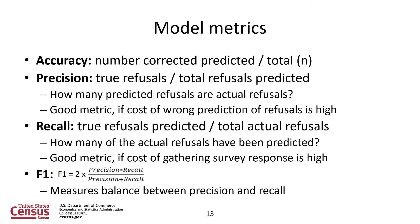We use four different model metrics. Accuracy — the number correctly predicted over the total number. Precision — the ratio of true refusals over the total number of refusals predicted; in other words, how many of the predicted refusals are actual refusals. This is a good metric if the cost of wrong prediction of refusals is high. Recall — the true refusals predicted over the total actual refusals; how many of the actual refusals have been really predicted. This is a good metric if the cost of gathering survey response is high. And F1, which is a balance between precision and recall.